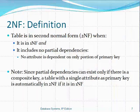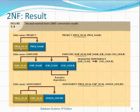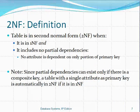This is a second normal form database because none of the tables have partial dependencies, though they may still have transitive dependencies. A table is in the second normal form if it is in the first normal form and has no partial dependencies — meaning no attribute depends on only a portion of the composite primary key. Notably, if the primary key has only one element, partial dependencies cannot exist, so such a table is automatically in the second normal form.